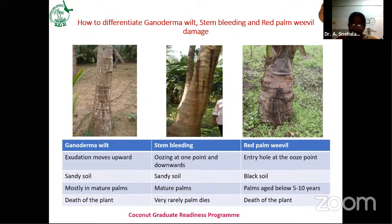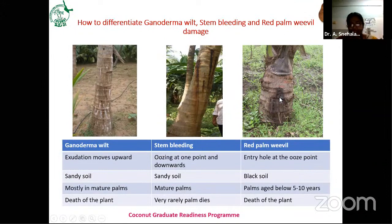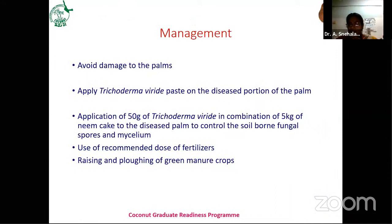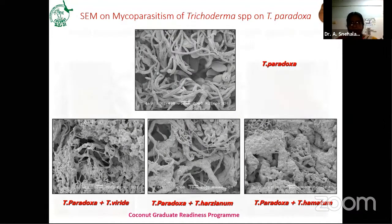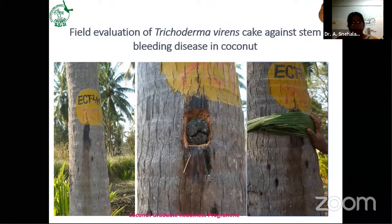If you go to the field, observe multiple plants and then confirm whether it is basal stem rot or stem bleeding. If the plantation is younger and there is an entry hole at the oozing point, suspect red palm weevil. For stem bleeding management — since it is a local, weak pathogen — avoid damage to palms, apply Trichoderma viride paste to the diseased portion of the plant, and apply 50 grams of Trichoderma viride with 5 kg neem cake to manage the soil-borne inoculum load.